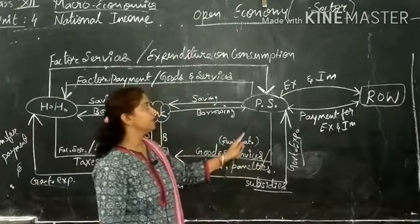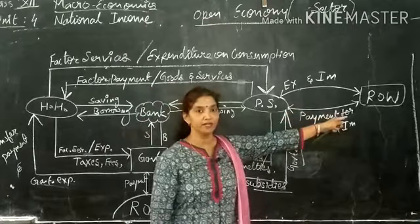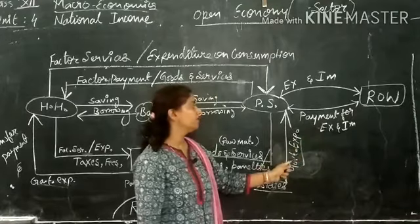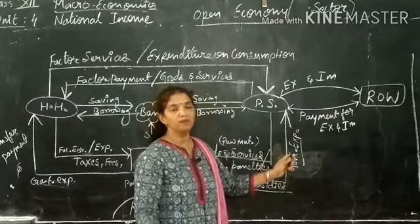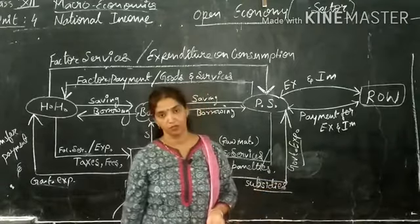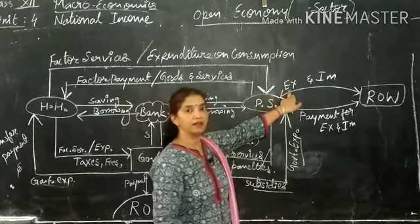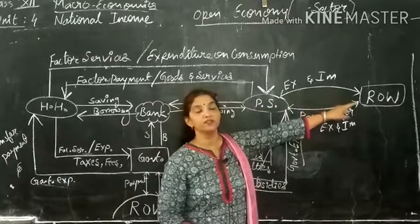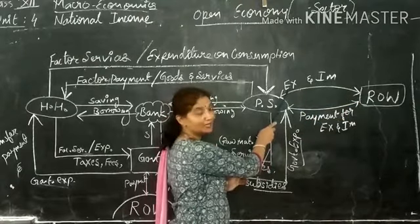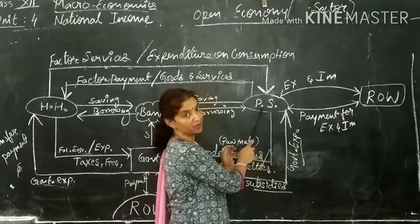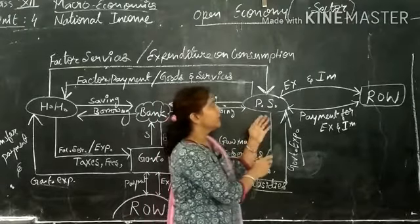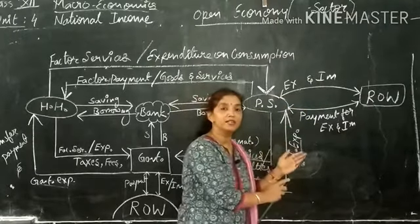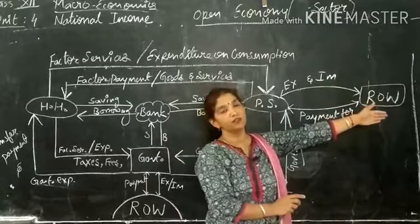In open economy, the producing sector does export and import with the rest of the world. It receives payment in terms of money or foreign exchange for exports, and gives foreign currency or foreign exchange for imports. If the producing sector is dealing with the rest of the world in terms of exports, it will receive foreign payment. If dealing in terms of imports, it has to pay foreign currency to the rest of the world.